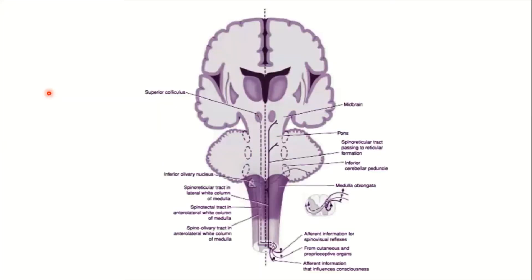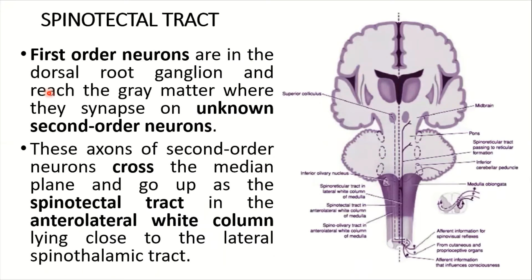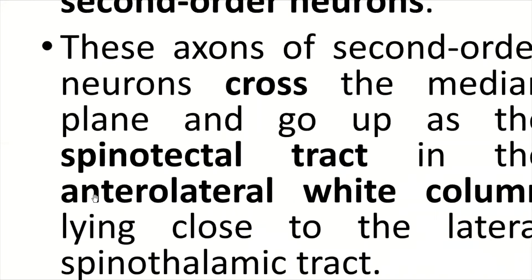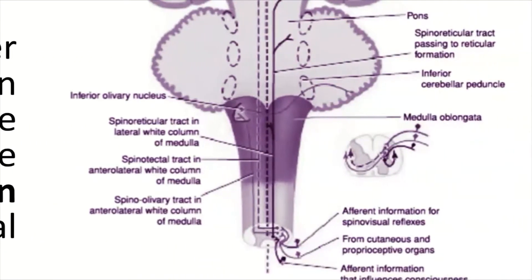We will use this diagram to discuss all three basic tracts one by one. Looking at the spinotectal tract — it starts from the dorsal root ganglion and brings afferent information for spinal visual reflexes, due to which the head and neck move towards the source of stimulus.